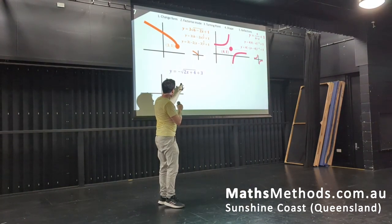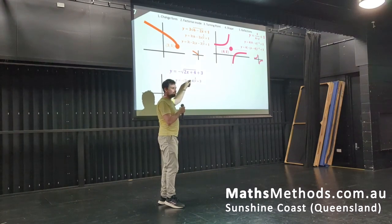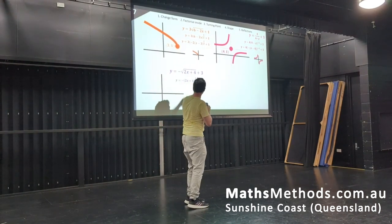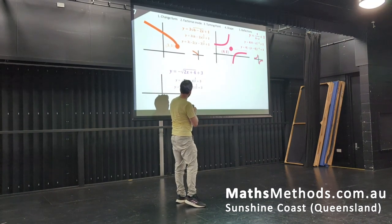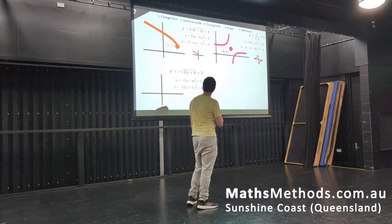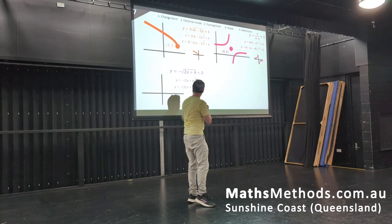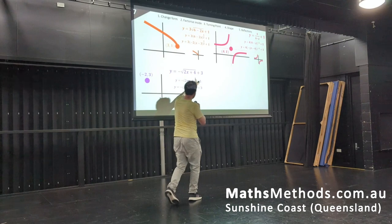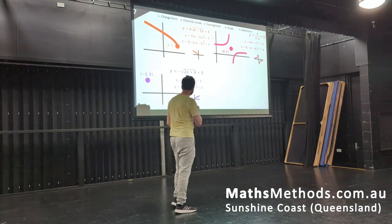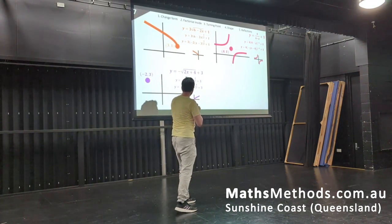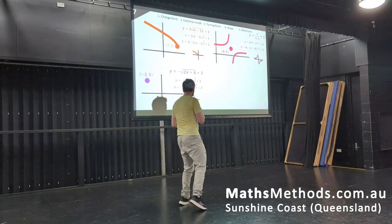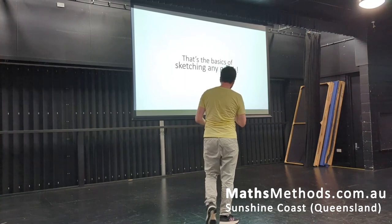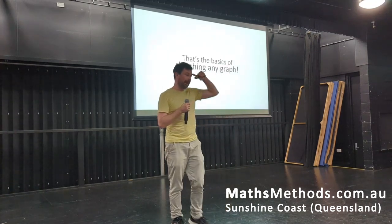If you've got something like this — a couple of brackets to the power of half — that's saying this is the square root. Change the form. Step 2: factorize the inside, take that 2 out. Next: turning point, so it'll be negative 2, 3 — chuck that in. Then find the shape: power of half means it's half the parabola. Reflections: negative in front of the y, so we flip around the x. And then we just sketch it in. So that's the basics of sketching any graph.